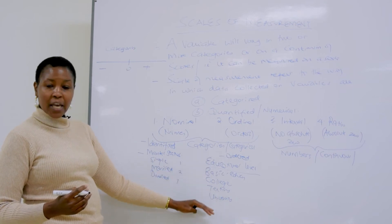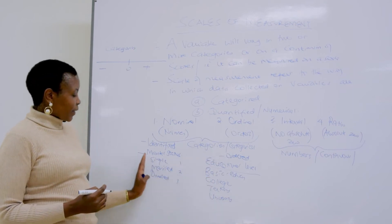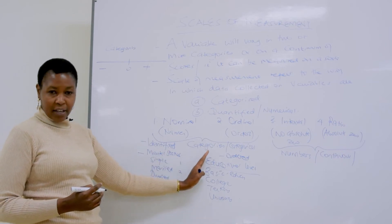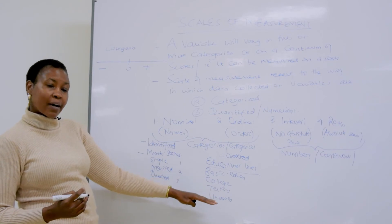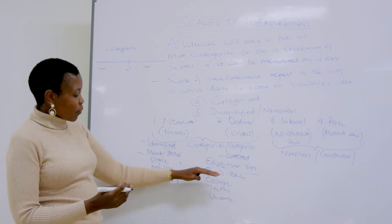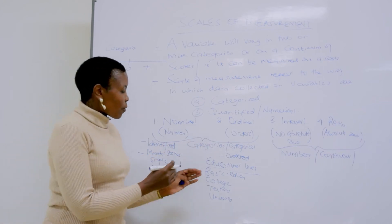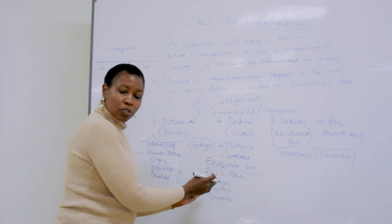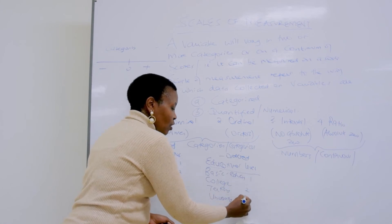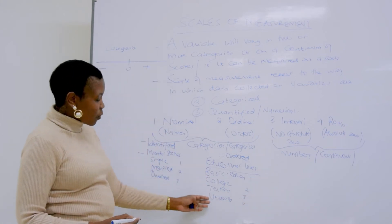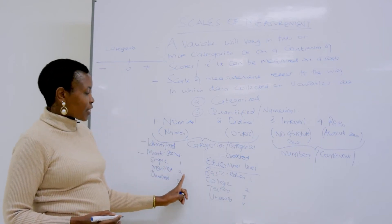When we talk about the variable educational level, it has gone a step further — it is not only naming, but it has ordered the variable from the lowest to the highest or vice versa. So when we want to analyze, again we will attach levels and we can reverse. We will only be attaching levels, just like we did with nominal. That is why we call these two categorical.